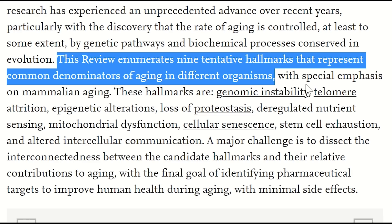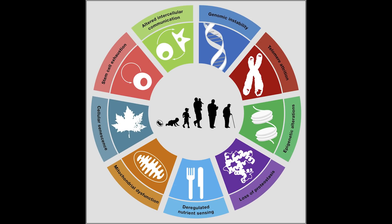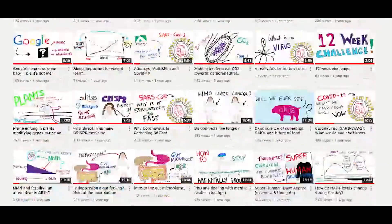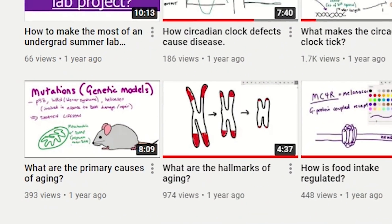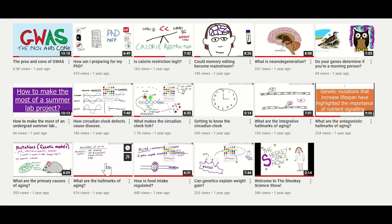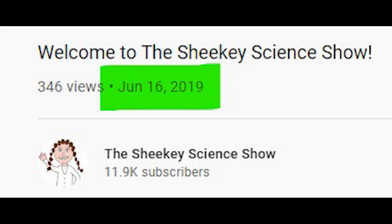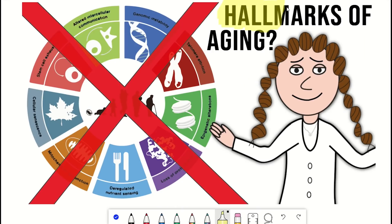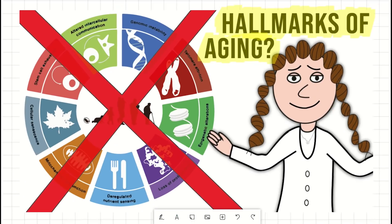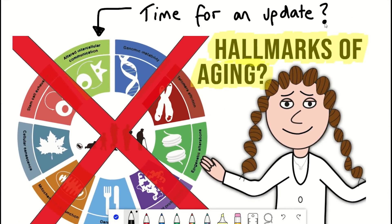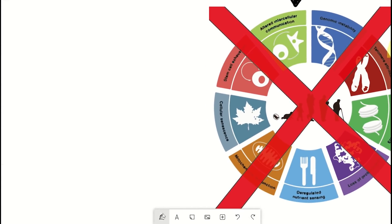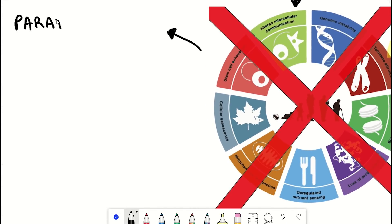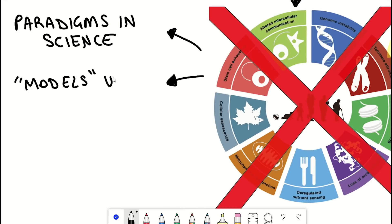I've always liked the hallmarks as an introduction to the field, so much so that I described the hallmarks in some of my earliest videos. And speaking of my earliest videos, given that it's almost my two-year birthday on YouTube, I thought I'd revisit the hallmarks of aging, given that there has been some recent criticism on them, suggesting that maybe we should start to look beyond them. So in this video, I'll first explain why models and paradigms are useful to scientific research, and then show you the different models used to explain aging, as the hallmarks is not the only model that has been proposed.